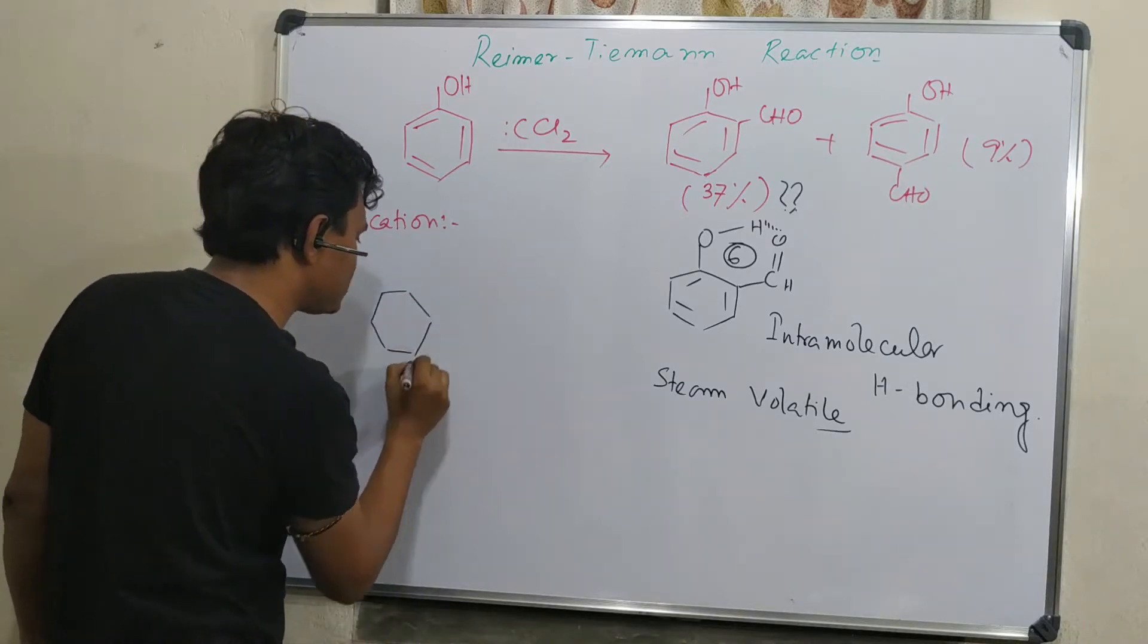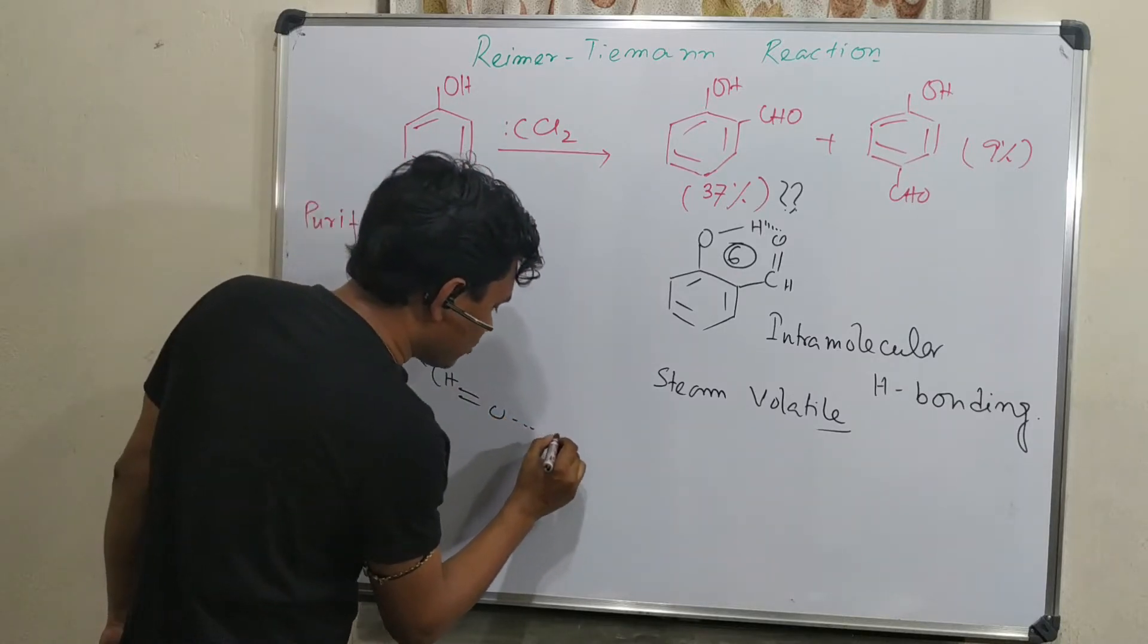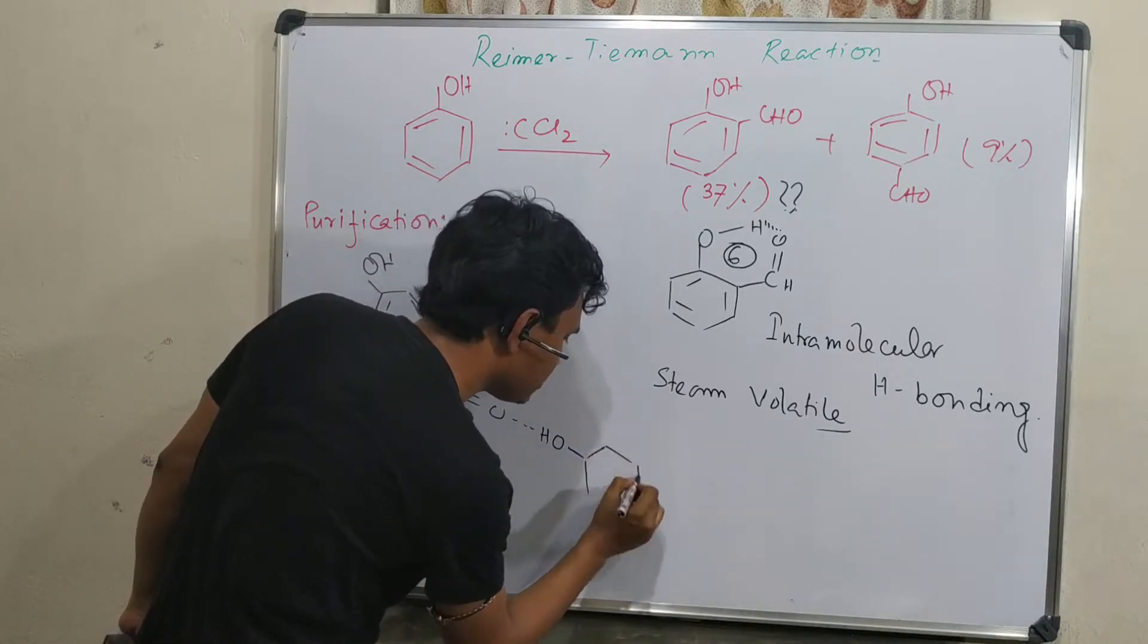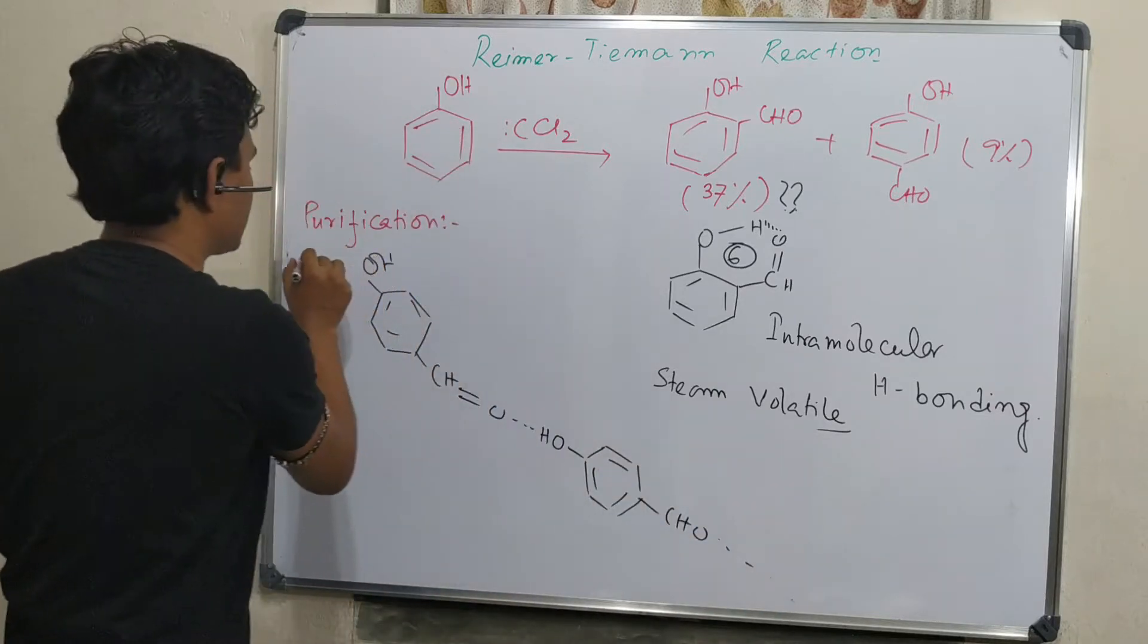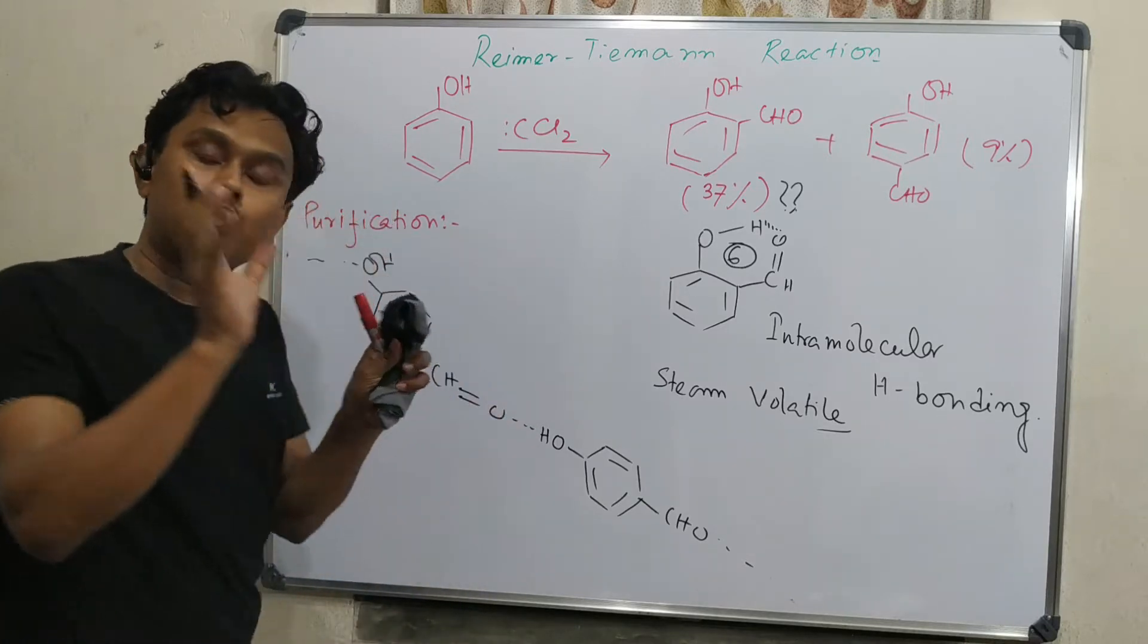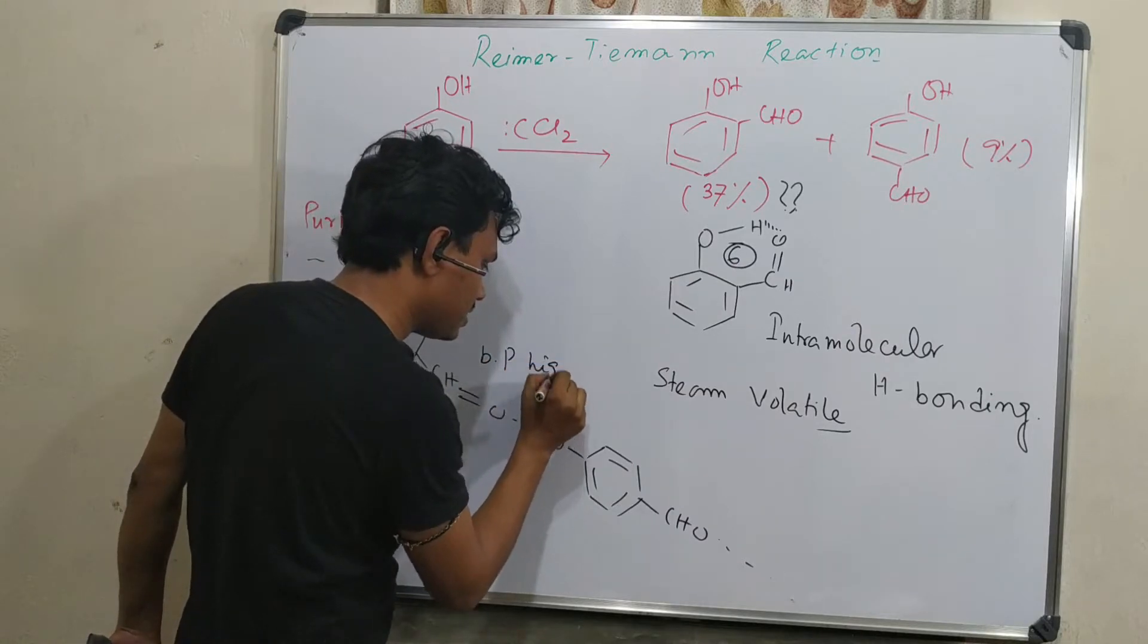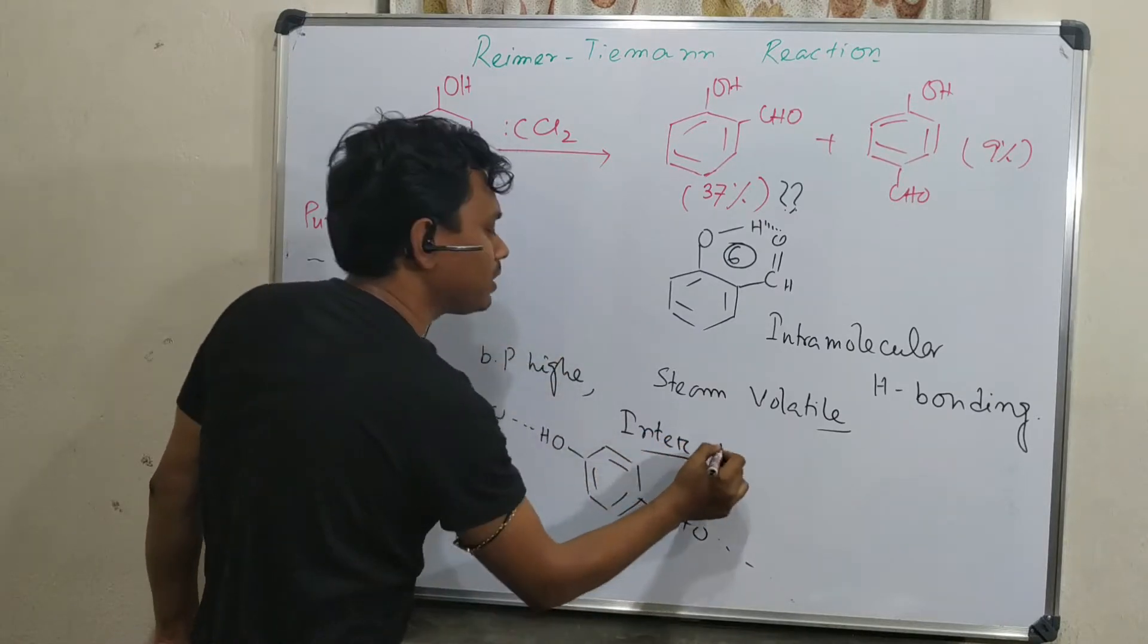If we consider the para isomer, intramolecular hydrogen bonding can't form. Instead, they can form intermolecular hydrogen bonding. This means another molecule of 4-hydroxybenzaldehyde can form a chain, and this chain continues. So if this chain is long, breaking this intermolecular hydrogen bonding unit and making the molecule gaseous is difficult.